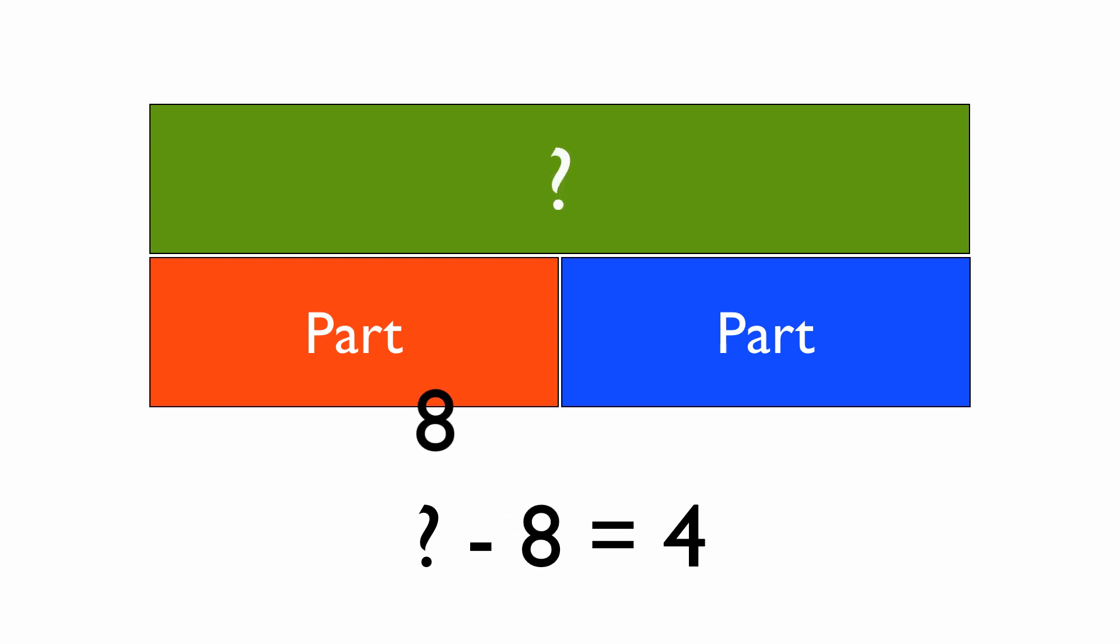We know the two parts. The two parts are 8 and 4. So to solve this subtraction problem, we actually need to do some addition. 8 plus 4 equals the number that we're looking for, which of course is 12.